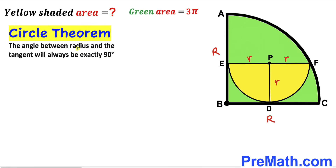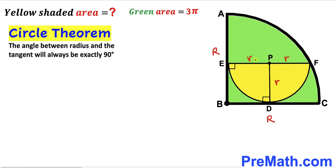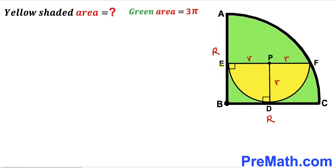According to the circle theorem, the angle between the radius and the tangent line will always be 90 degrees. So this angle is 90 degrees, and likewise this angle is 90 degrees as well, since these are our radii and these are our tangent lines. We can observe that segment EB is equal to PD, which is lowercase r — so EB = r.